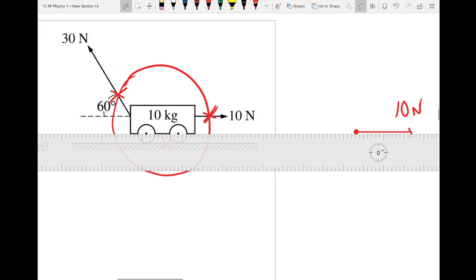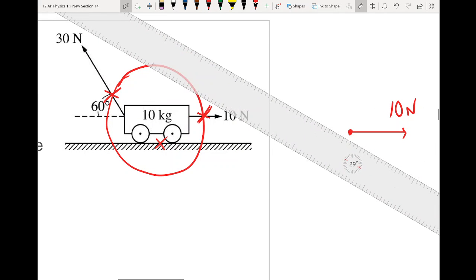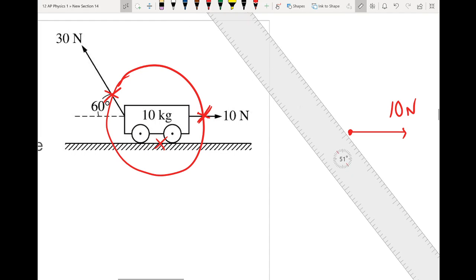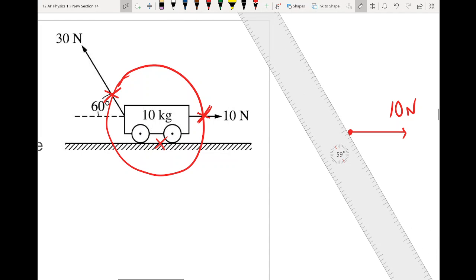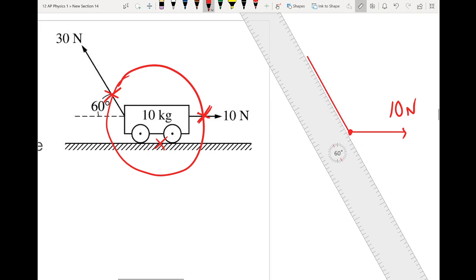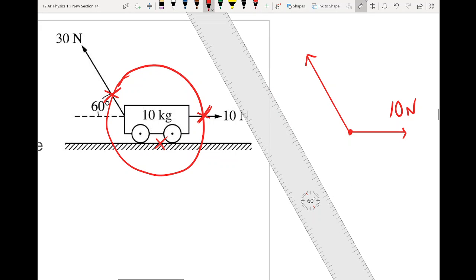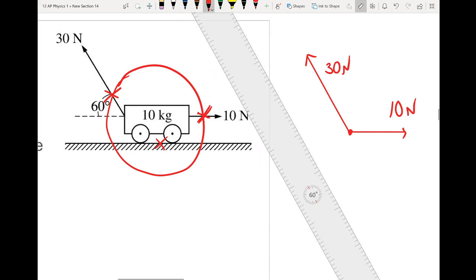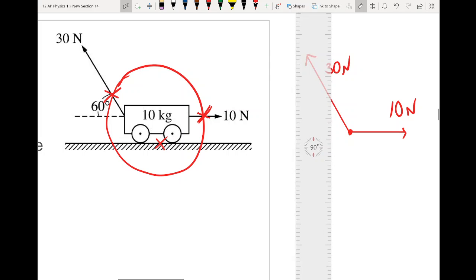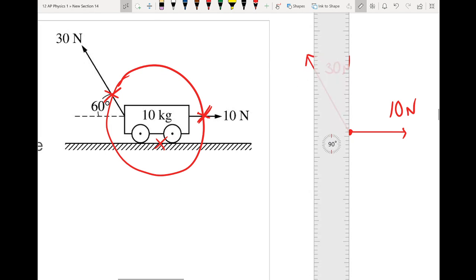I have a 30 Newton force that is at a 60 degree angle. And then I also have, I know that my cart is full of mass, or it has mass, and it exists on earth, which means that we have this downwards gravitational force Fg.